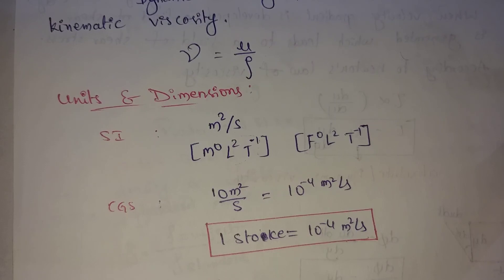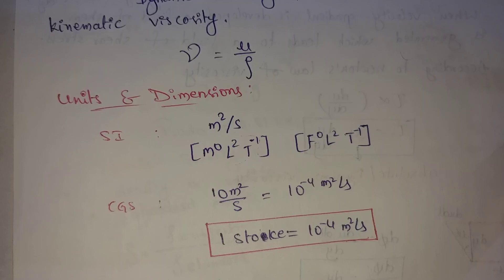These two values are very important — water's kinematic viscosity and air's kinematic viscosity approximate values. One important note: the kinematic viscosity of air is approximately 15 times that of water at 20 degrees. So at 20 degrees, air's kinematic viscosity is about 15 times that of water.